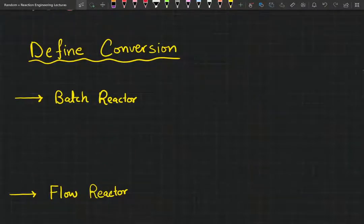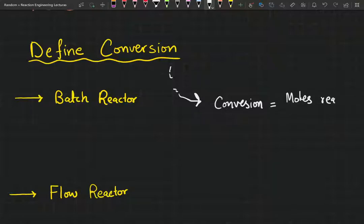Before we talk about sizing reactors, we need to first define what conversion is. So from a mass and energy balance class, you know that conversion in a reaction, or even from a gen chem class, conversion in a reaction is moles reacted divided by moles fed. These could be the moles fed to a batch reactor, these could be the moles fed to a flow reactor.